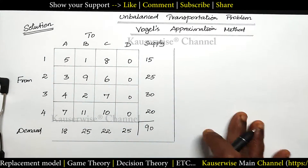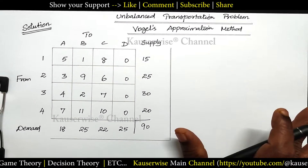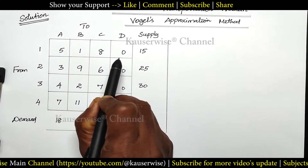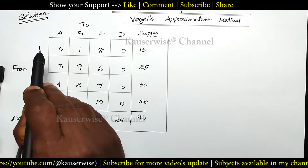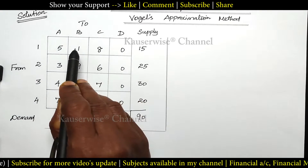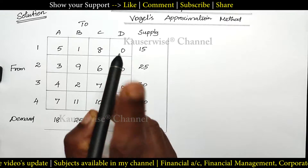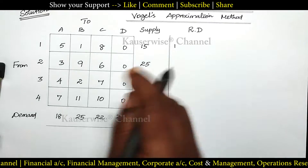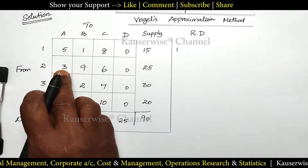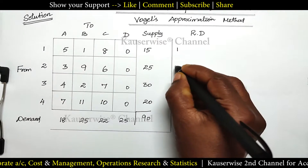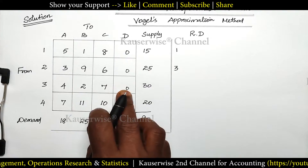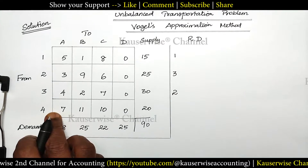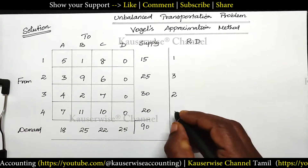For Vogel's Approximation Method the first step is we need to find row difference and column difference. For each and every row we need to find the least value and the next least value difference. In the first row the least value is 0, next least value 1, difference is 1 — this is called the row difference for the first row. Second row: 0 and next least value 3, difference 3. Next row: least value 0, next least value 2, difference 2. Last row: 0 and 7, difference 7.